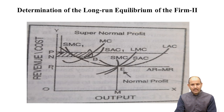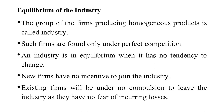Now we discuss the equilibrium of the industry. As mentioned, industry is a group of firms producing homogeneous products — this is only possible under perfect competition. An industry is in equilibrium when it has no tendency to change. New firms have no incentive to join the industry, and existing firms are under no compulsion to leave, as they have no fear of incurring losses. When there is no incentive for new firms to enter or existing firms to exit, the industry is in equilibrium.